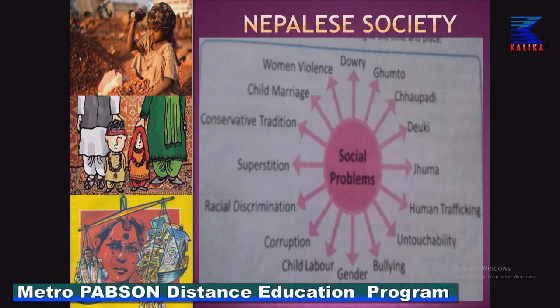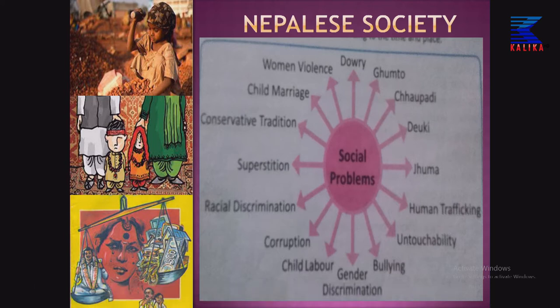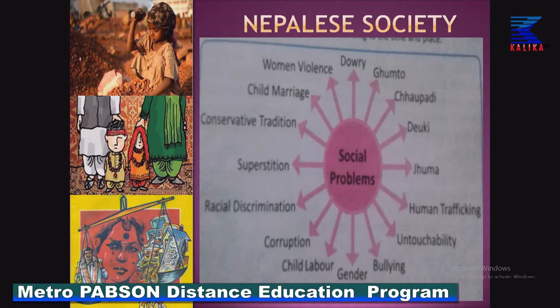When we talk about social problems in Nepal, Nepalese society is full of social problems — uncountable, some regional, some national. The major social problems found in Nepal include: dowry system, Gumtov Pratha, Chaupadi system, Devuki system, Juma, human trafficking, untouchability, bullying, gender discrimination, child labor, corruption, racial discrimination, superstition, conservative tradition, child marriage, and women or gender violence.